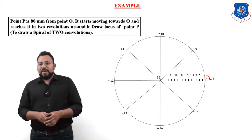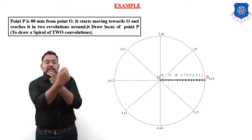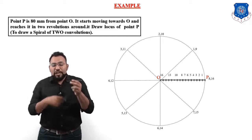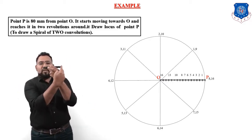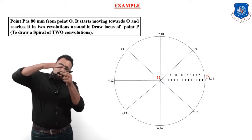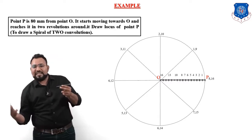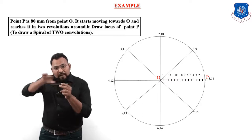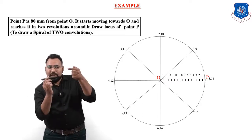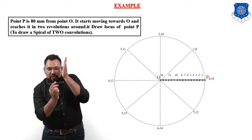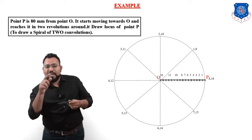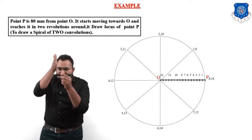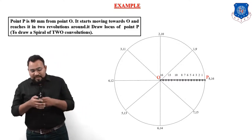Why do we number from the P side going one, two, three, four toward O, rather than from the O side? Because the problem states that point P starts moving towards O. So point P is on the right and point O is on the left, and P travels inward. If the point were moving away from O, we would number from the O side outward. Here, since P travels towards O, we number from the P end: 1, 2, 3, 4 up toward O.